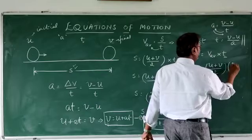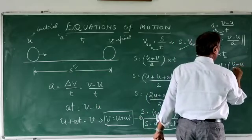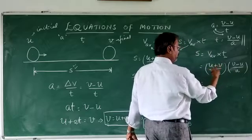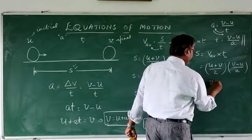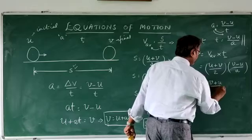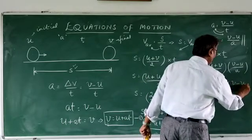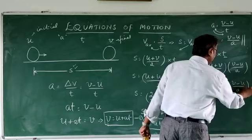So, let me substitute V minus U divided by A. Let me just make a small change. U plus V, I am going to write it as V plus U divided by 2. And V minus U divided by A.